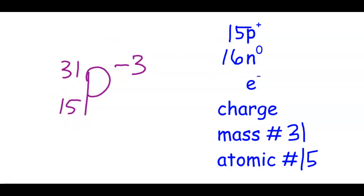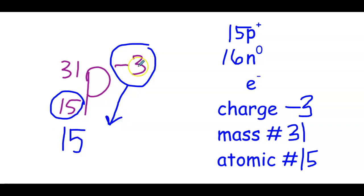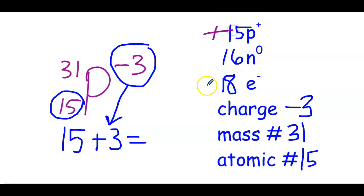Next is the charge — it's a negative 3. The sign matters, whether it's negative or positive. To figure out how many electrons they have, we take the atomic number of 15, and we do the opposite of the charge. Since the charge is negative 3, we add 3: 15 plus 3 equals 18. So we have 18 electrons. This should make sense, because if I have a positive 15 and a negative 18, and I type positive 15 plus negative 18 into my calculator, I get negative 3 as the answer — which matches the charge.